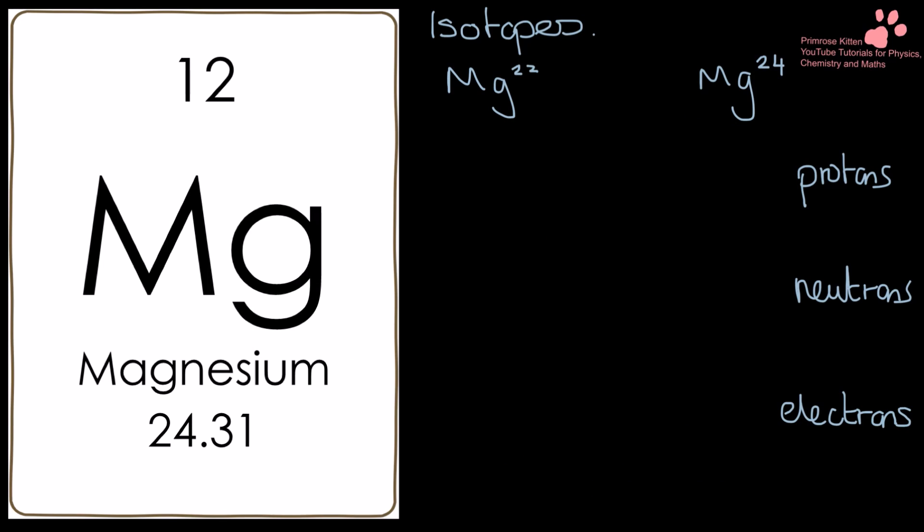The way atoms are created in space is completely random. It's things smashing into each other, and some of them fusing, some of them not fusing. So while we're going to have a consistent number of protons within a particular type of atom, we are not necessarily going to have a consistent number of neutrons. And things that have the same number of protons but a different number of neutrons are called isotopes.